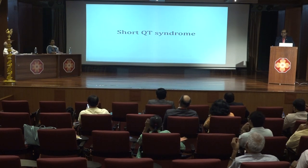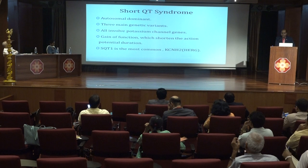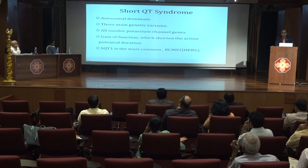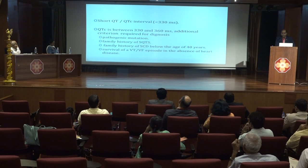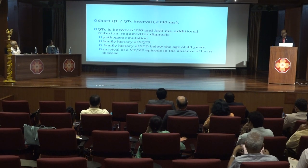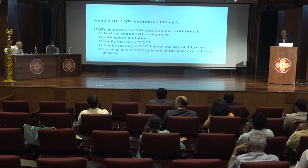Just as long QT leads to sudden cardiac death, so does short QT syndrome. Short QT syndrome is an autosomal dominant condition caused by a gain-of-function mutation of the potassium channel. It is a highly malignant disorder presenting with sudden cardiac death from infancy to young adulthood. It is defined on ECG as a QT interval less than 330 milliseconds. When QTc is between 330 and 360 milliseconds, additional criteria are needed, including identification of pathogenic mutation, family history of short QT syndrome, family history of sudden cardiac death, or survival of a VT or VF episode in the absence of heart disease.